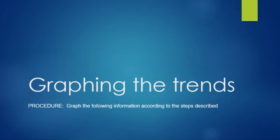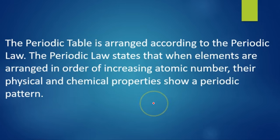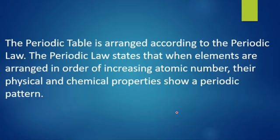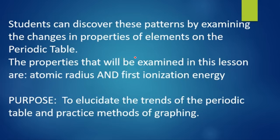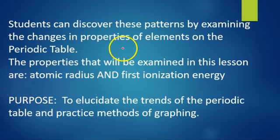Today we're going to graph the trends of the periodic table. The periodic table is arranged according to the periodic law, which was published in 1871 by Dmitri Mendeleev. The periodic law states that when elements are arranged in order of increasing atomic number, their physical and chemical properties show a periodic pattern. We're going to discover that these patterns can tell us things about how elements exist overall and make generalized statements about the elements on the periodic table.